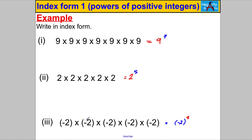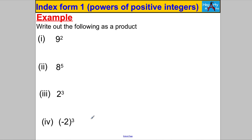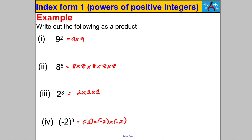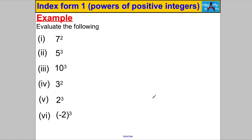Write the following out as a product: 9 squared means 9 multiplied by 9; 8 to the power of 5 means 8×8×8×8×8; 2 cubed means 2×2×2; and negative 2 cubed — remember keep those brackets — means (−2)×(−2)×(−2). Now evaluate the following: 7 squared means 7×7 = 49 — don't say 14 by just multiplying 7 and 2. 5 cubed is 5×5×5 = 125, not 15. 10 cubed is 10×10×10 = 1000.